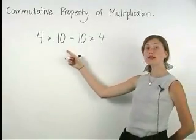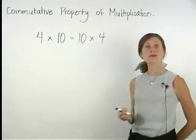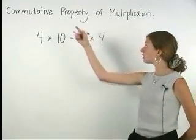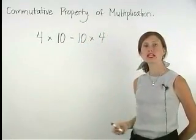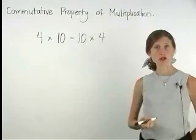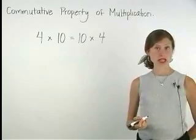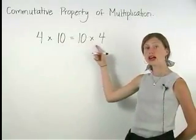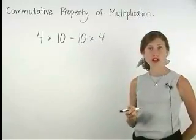The problem 4 times 10 equals 10 times 4 demonstrates the commutative property of multiplication. In other words, the commutative property of multiplication says that changing the order of the factors does not change the product.